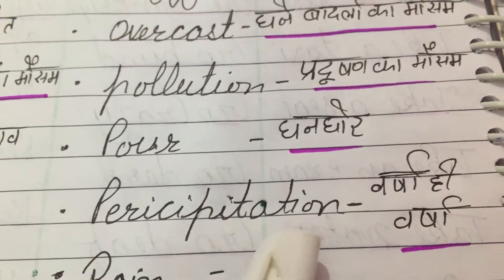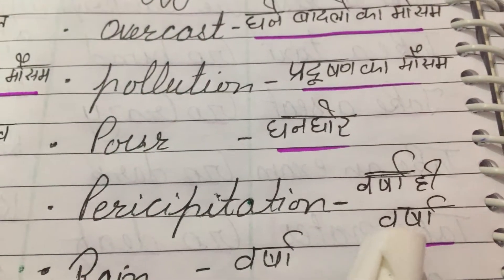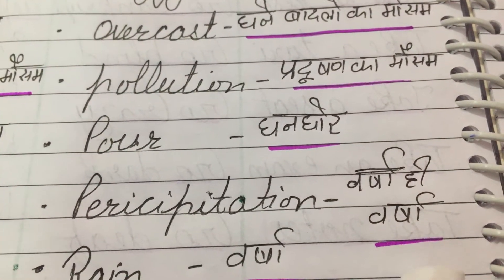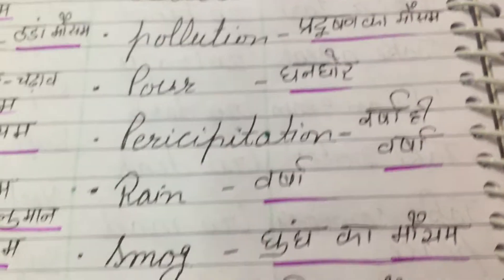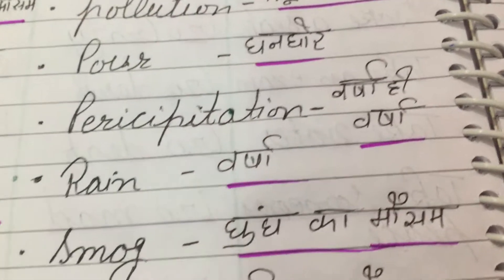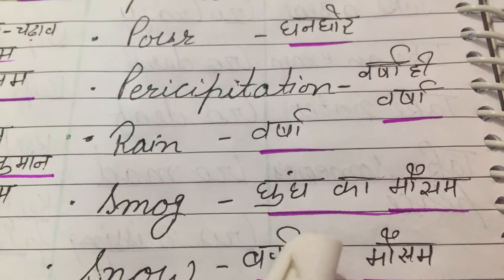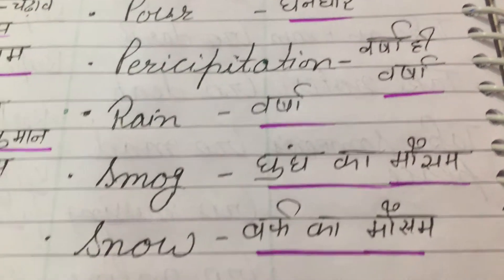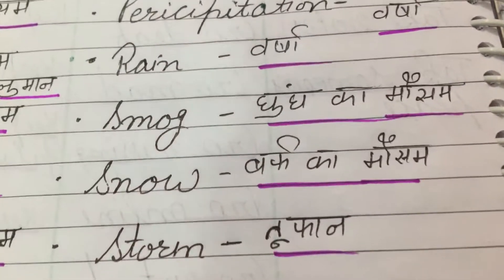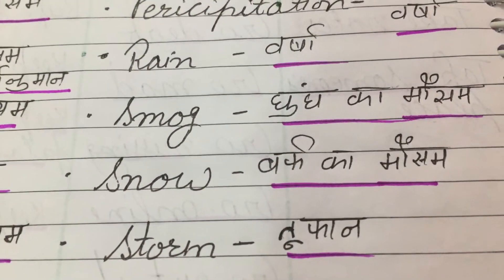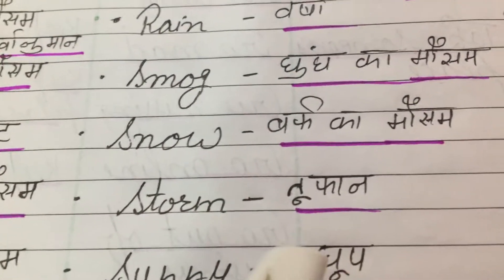Precipitation means Varsha hi Varsha. Rain means Varsha. Smog means Dund ka mousam. Snow means Baraf ka mousam.